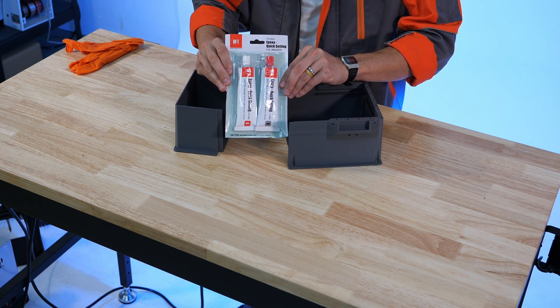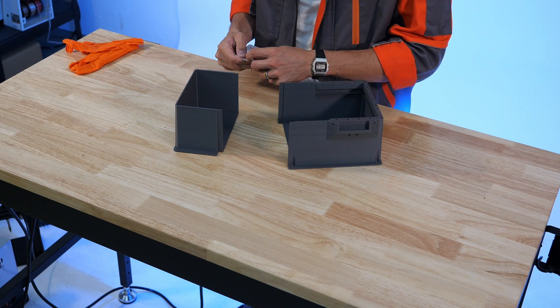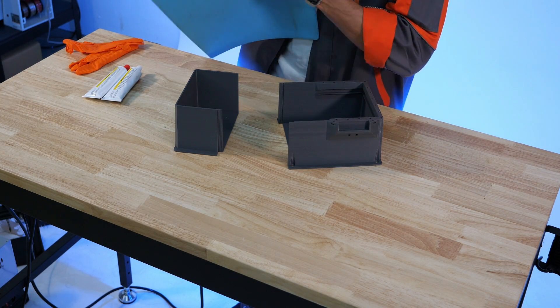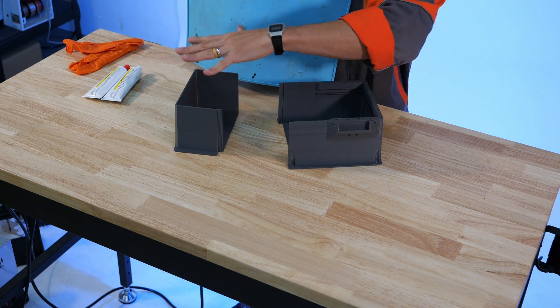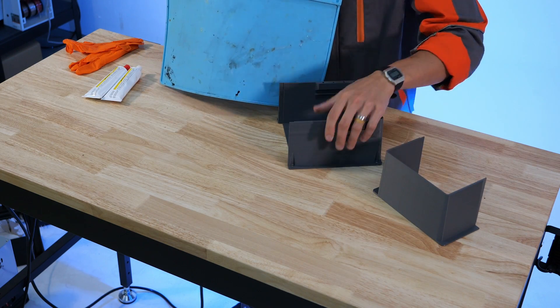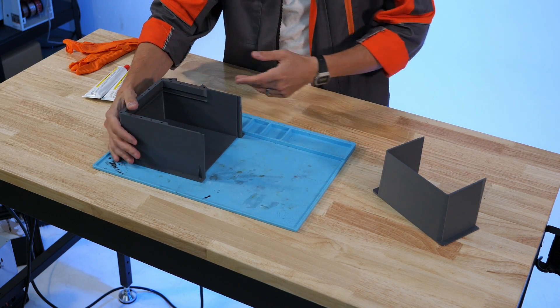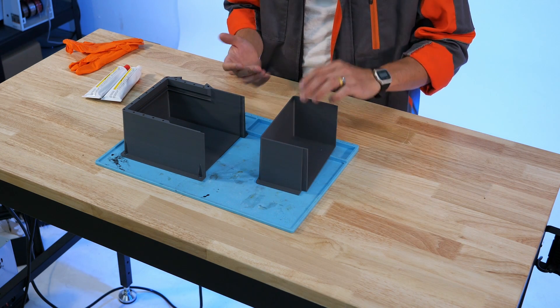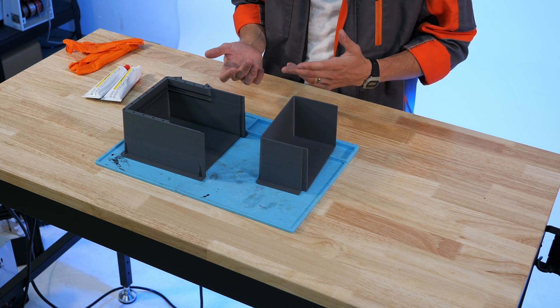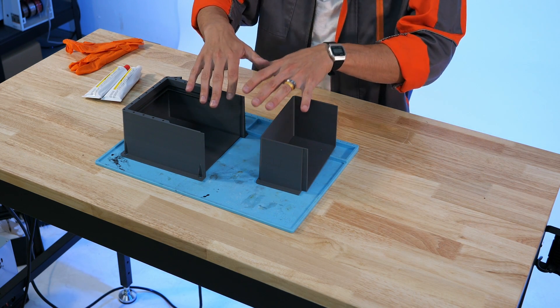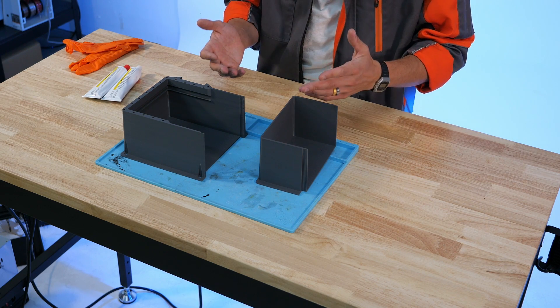We have a two-part epoxy. You can pick it up at most hardware stores. When we're performing this task you might want to get something like a silicone mat to place under your vat for the actual adhesive application. You could also use paper towels or aluminum foil shop towels. Just really anything to keep the epoxy off of whatever your work surface is.